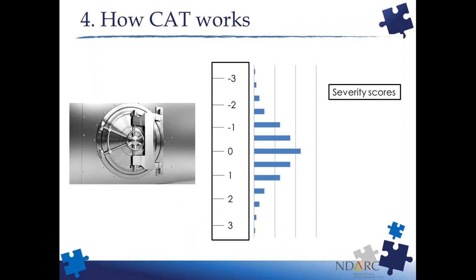Because we're tailoring each administration to each person, another person might come along and have a very different set of items presented to them. The first item will always be the same to establish an initial score. But subsequent items are selected based on each response - if they say no to the first item, the next might be a low-severity item; if yes, we know they're in a higher severity range. The computer continues until reaching a desired level of precision and terminates the test.